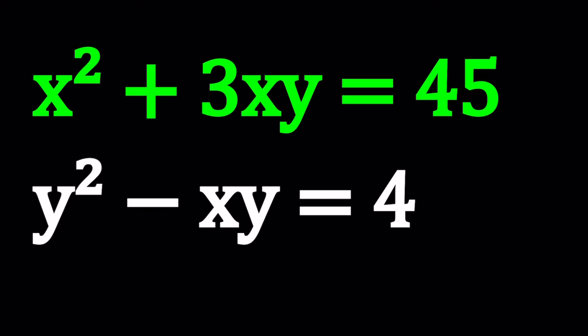Hello everyone. In this video, we're going to be solving a polynomial system. We have x squared plus 3xy equals 45 and y squared minus xy equals 4. And we're going to be solving for x and y values. I'll be presenting two methods. Let's start with the first method.